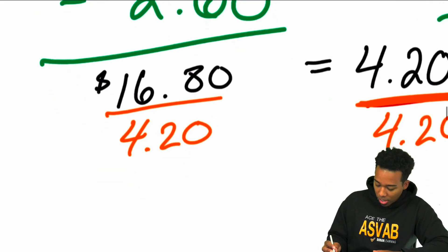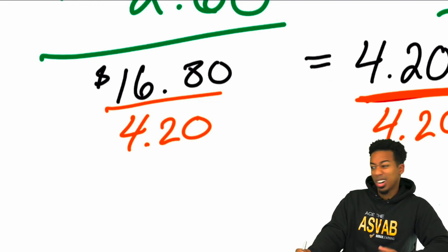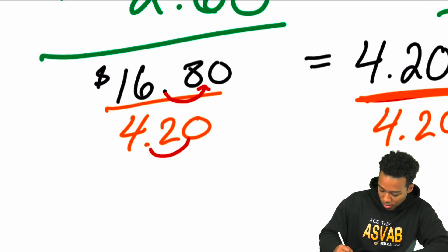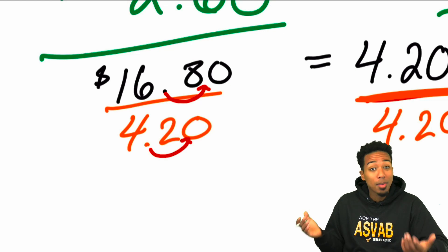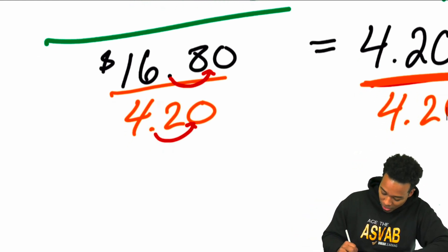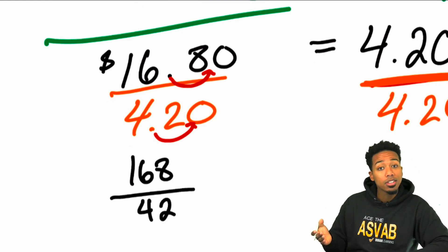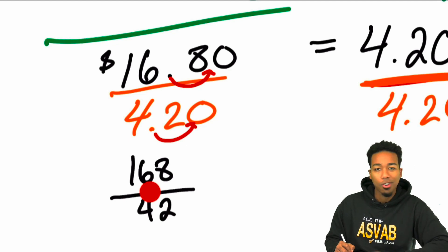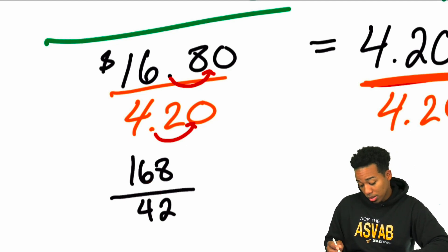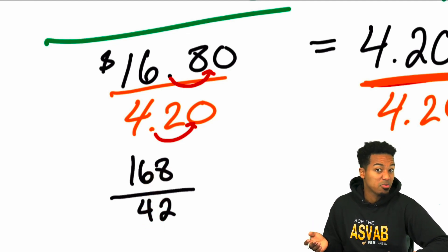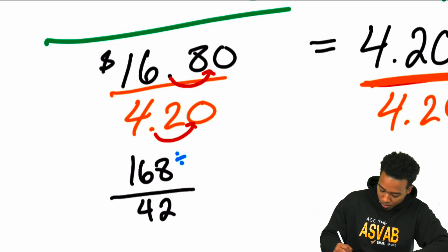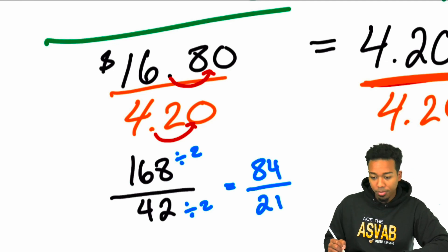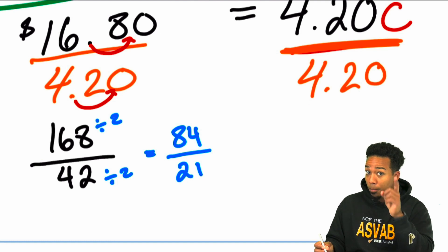We're going to divide both sides. You may be looking at this and thinking: decimals — I don't like this. It's all good. You can use this common trick: move the decimal over on both the numerator and denominator. Remember, whatever you do to the top you do to the bottom — fractions. So you turn this into 168 over 42. Then from here you divide. You can't do long division since 42 doesn't go into 1 or 16, but notice both numbers are even — divide both by 2 to get 84 divided by 21. And 21 goes into 84 exactly four times.